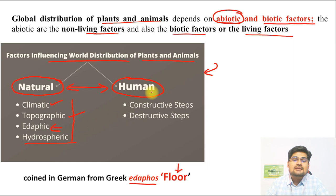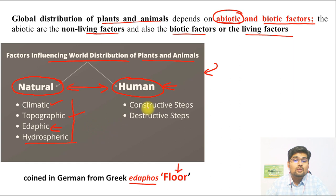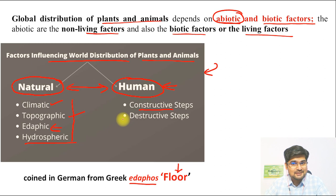Human beings are very much responsible for the global distribution of plants and animals in two ways: constructive ways and destructive ways. In both ways, human beings impact the global distribution of these plants and animals. That is one important way to categorize the factors.